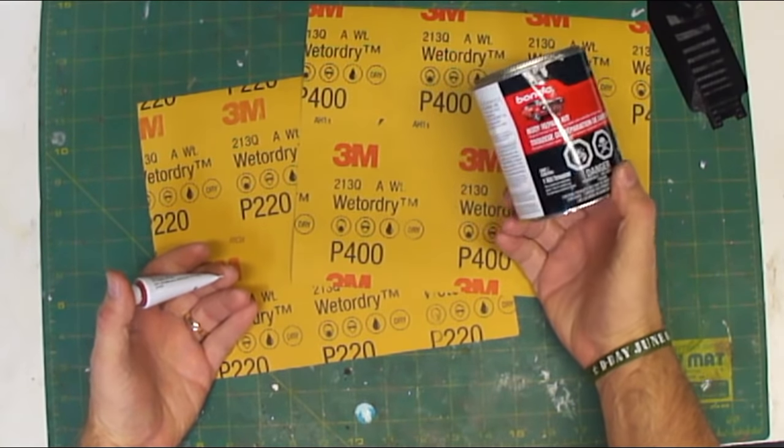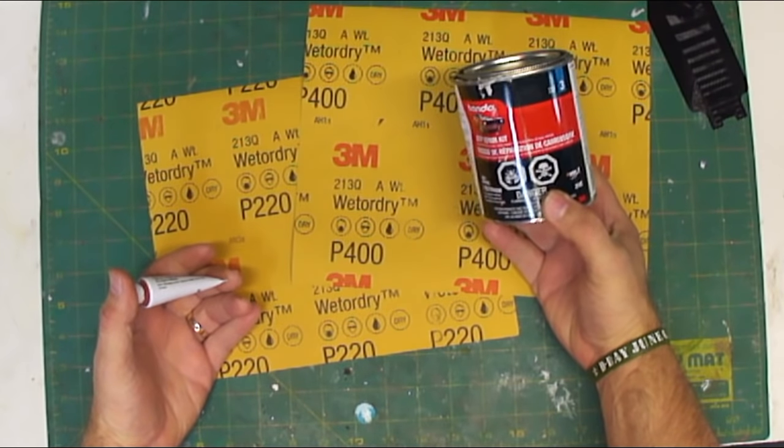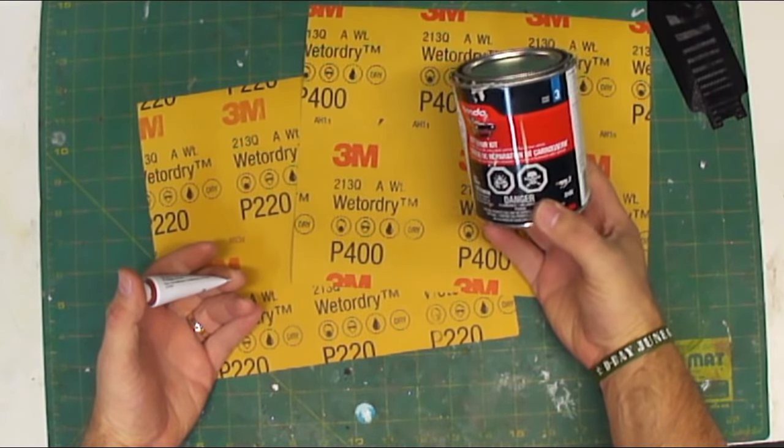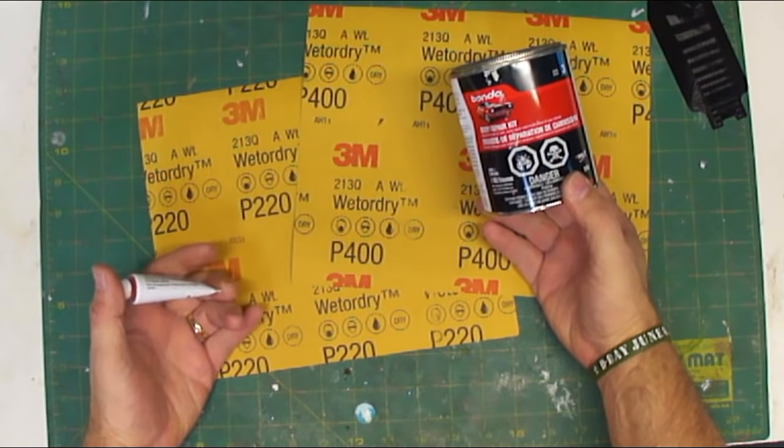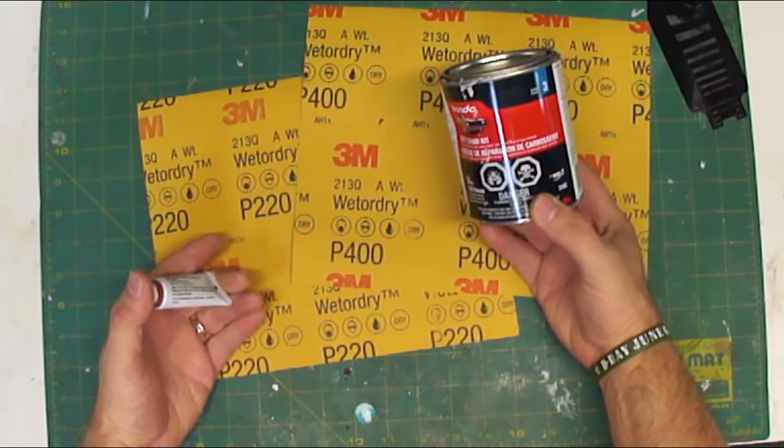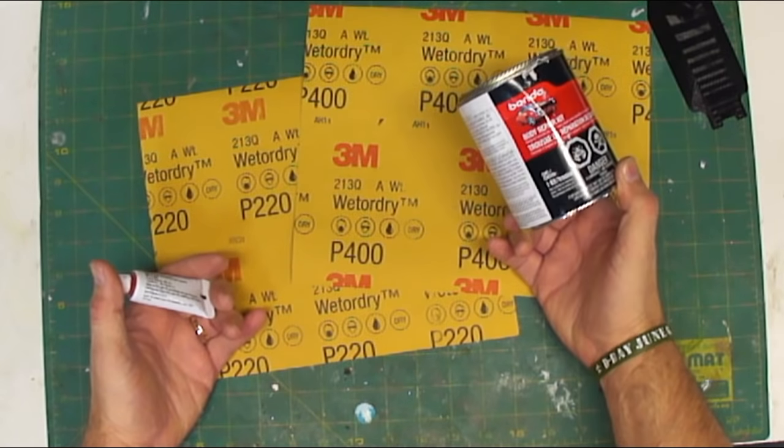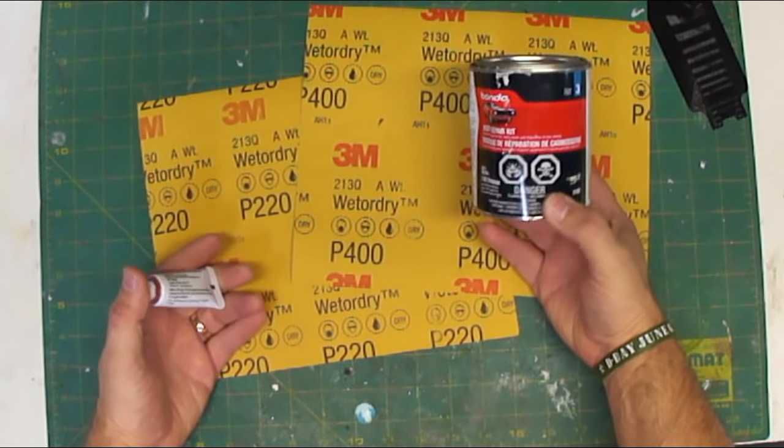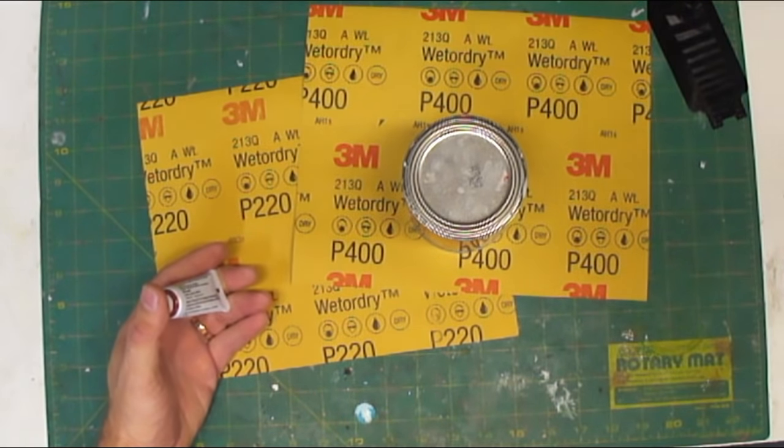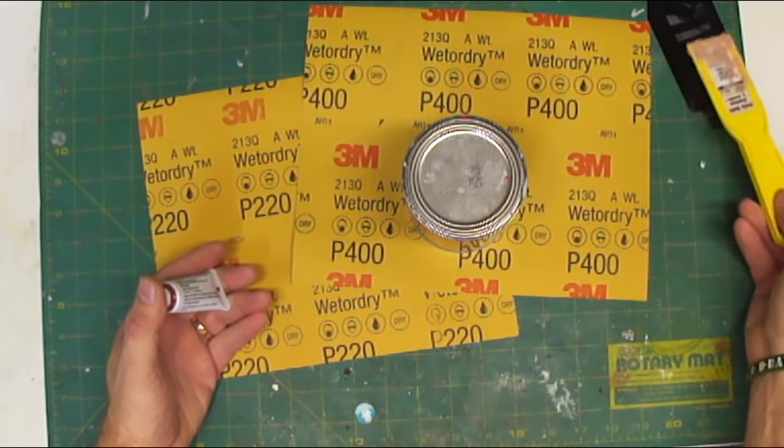And you also need some good old-fashioned Bondo. I buy this at Canadian Tire. I'm Canadian, so I buy it at Canadian Tire. If you're anywhere else in the world, any automotive supply kind of place, even Walmart, might actually sell it. And you're going to need some kind of spatula of some sort that you can apply the Bondo to this.